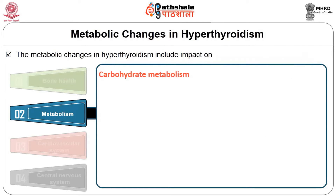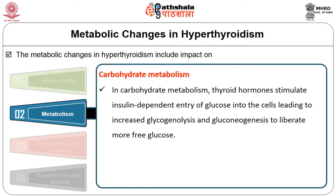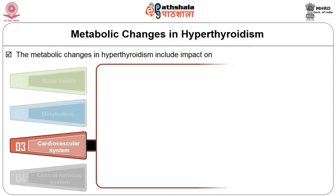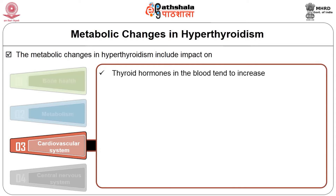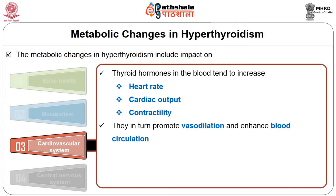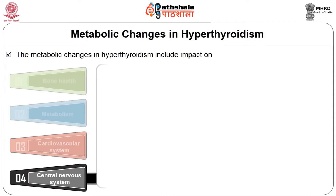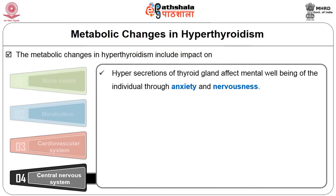In carbohydrate metabolism, thyroid hormones stimulate insulin-dependent entry of glucose into the cell, leading to increased glycogenolysis (breakdown of glycogen) and gluconeogenesis (production of glucose from non-carbohydrate sources) to liberate more free glucose. Regarding the cardiovascular system, thyroid hormone tends to increase heart rate, cardiac output, and contractility, and promotes vasodilation and enhanced blood circulation. Hypersecretion of the thyroid gland also affects mental well-being through anxiety and nervousness.